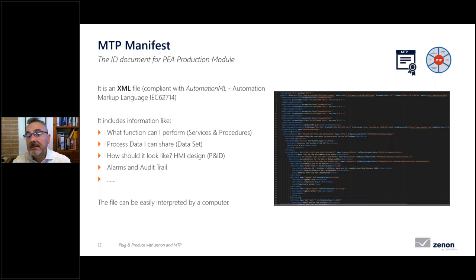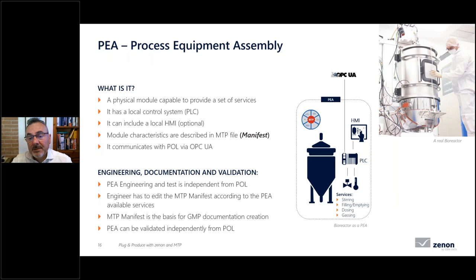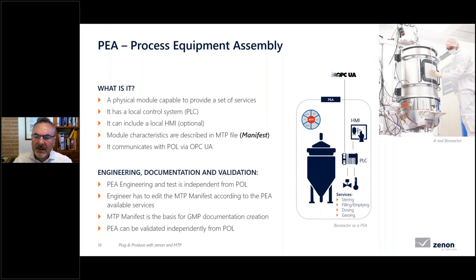The MTP manifest is a computer-readable XML file. The second component is the PEA — a physical mechanical component with local automation such as a PLC, specific services based on its capabilities, a local HMI for local monitoring and control, OPC UA communication with the upper-level system, and the MTP description file.